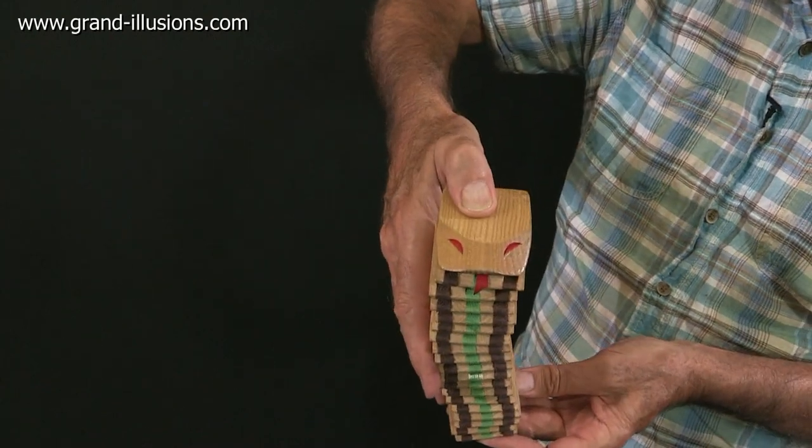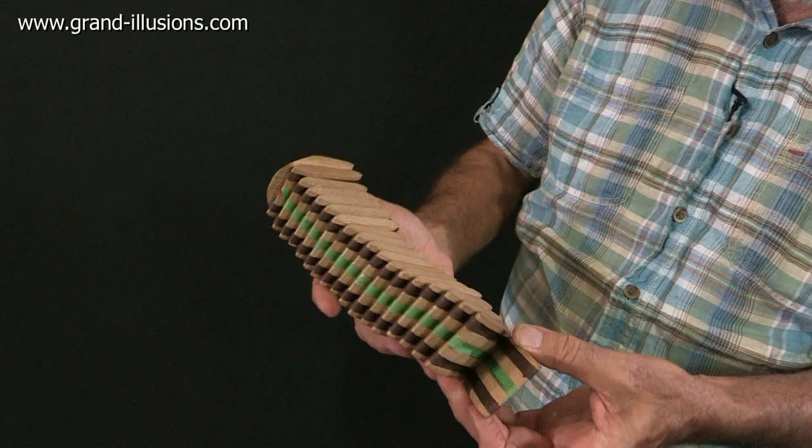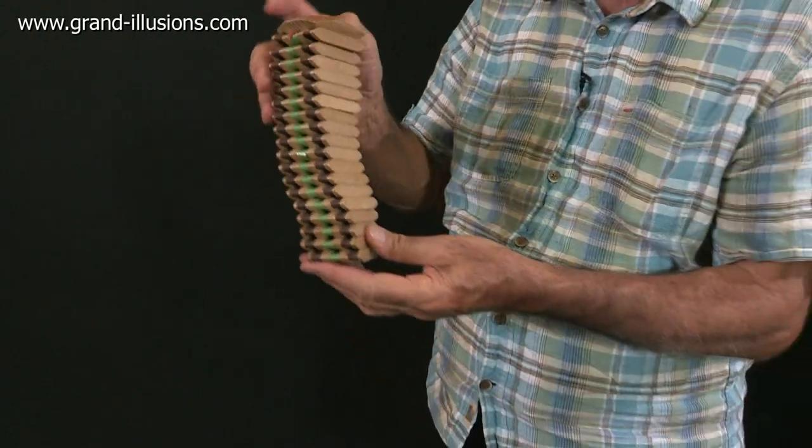But look, there's a snake on the front, top end of it, and all the ribbons are recessed into slots so that it makes a lovely clacking sound.